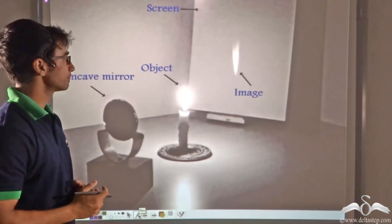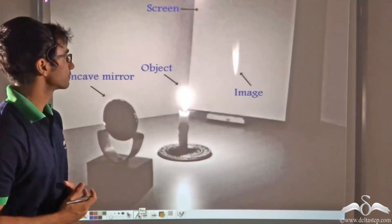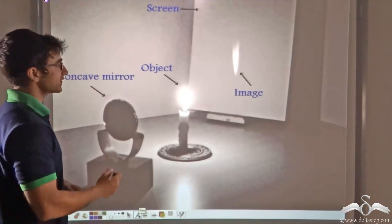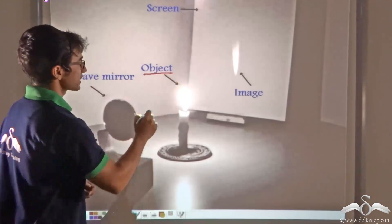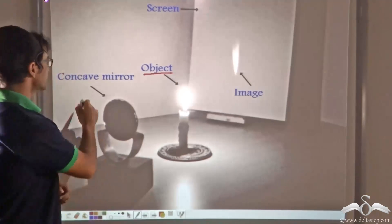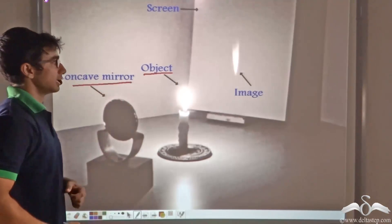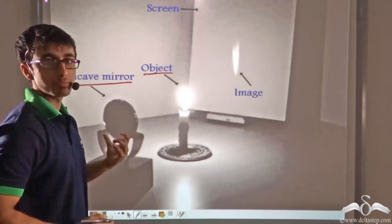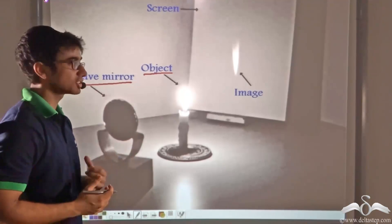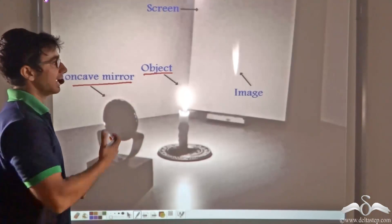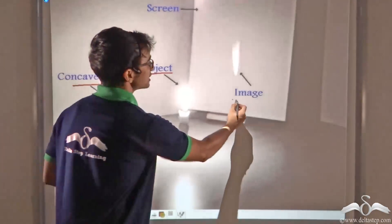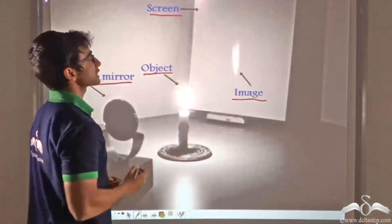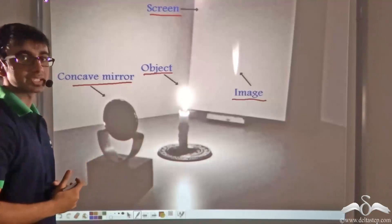Consider the picture being shown on the screen. Here we have placed an object — a candle — in front of a concave mirror. Since we have placed the object in front of the concave mirror, we will obtain an image. As you can see, the image has been obtained on a screen that has been placed behind the object.